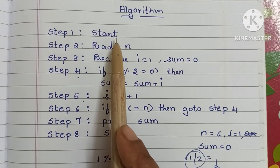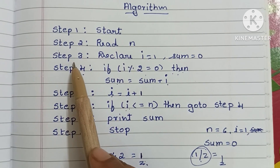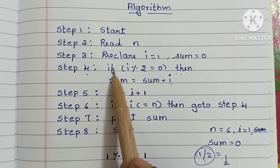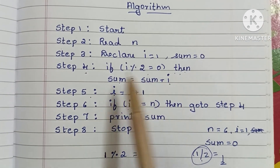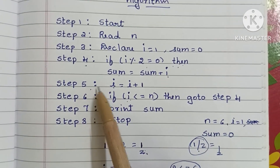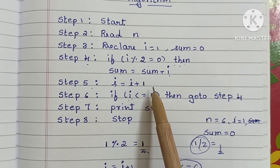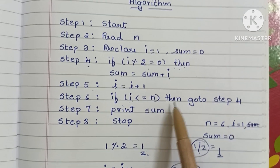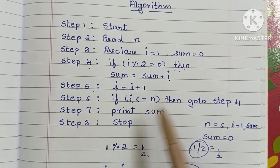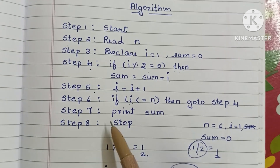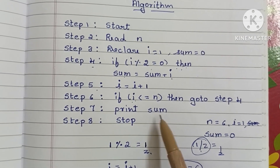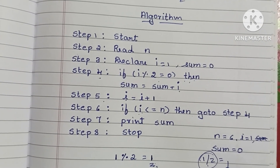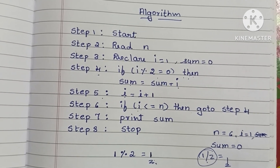So to summarize: step 1 is start; step 2, read N; step 3, declare i equal to 1 and sum equal to 0; step 4, check if i modulo 2 equals 0, then sum equals sum plus i; step 5, increment i by 1; step 6, if i is less than or equal to N go to step 4, else go to step 7; step 7, print sum; step 8, stop. This is the algorithm to find the sum of even numbers between 1 to N.